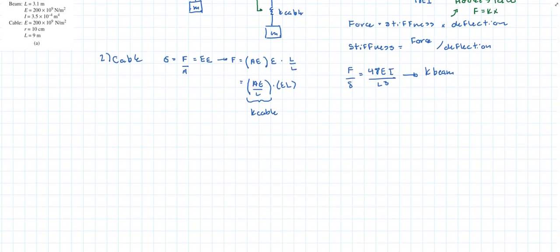Okay so now let's calculate the equivalent stiffness of the new system. Since they're in series we have to use this formula. So the inverse of the sum of the inverses. So that's 1 over k beam plus 1 over k cable. And we'll substitute the values.